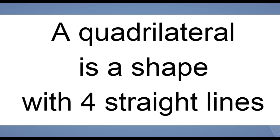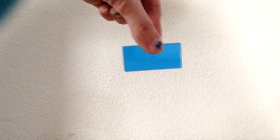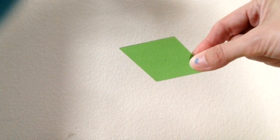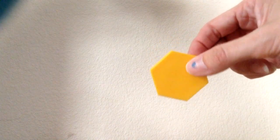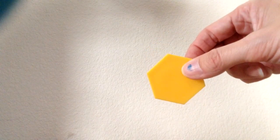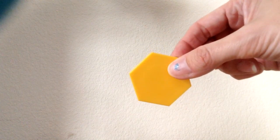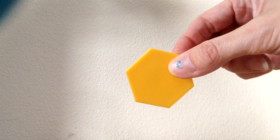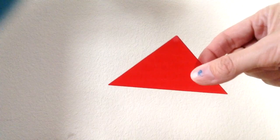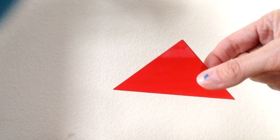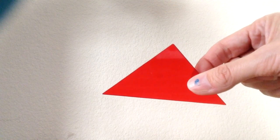But a quadrilateral can only have four sides. So this is a quadrilateral — it has only four sides. This is also a quadrilateral — it has four sides. This is not a quadrilateral; it has six sides. It's a polygon because it has straight lines, but because it has more than four sides, it is not a quadrilateral. This is a polygon because it has straight sides, but because it has less than four sides, it's not a quadrilateral.